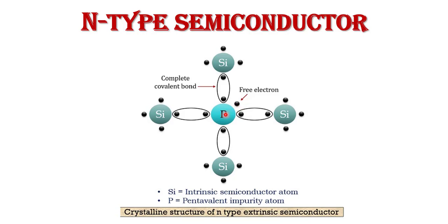Each phosphorus atom donates one free electron, which is why it is called a donor type impurity. The number of free electrons depends on the amount of impurity added to the silicon — a small amount of impurity generates millions of free electrons. Regarding the charge on an N-type semiconductor: many people think that because it has a large number of free electrons, its total charge is negative, but this assumption is wrong. Even though N-type semiconductor has many free electrons, these are provided by pentavalent atoms that are electrically neutral, so the total charge of an N-type semiconductor is also neutral.